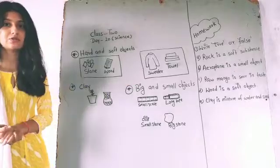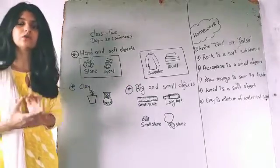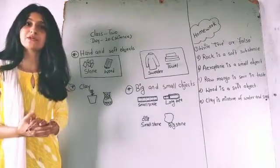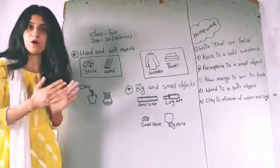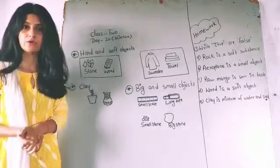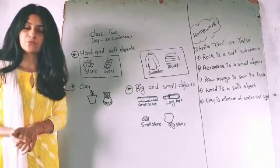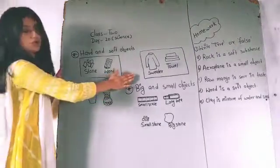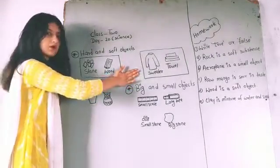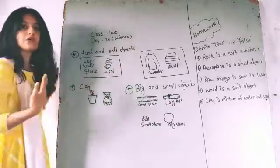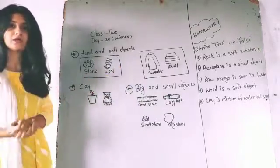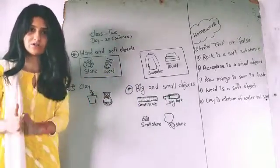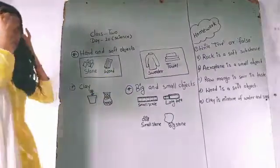So students, how can we recognize whether an object is hard or soft? We can recognize by touching them. When we touch the object, we can feel whether the object is hard or soft.